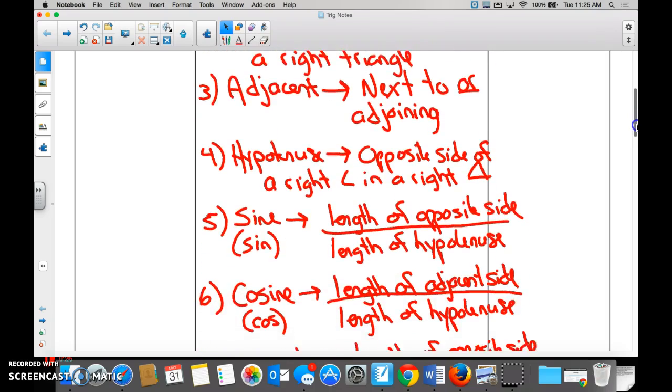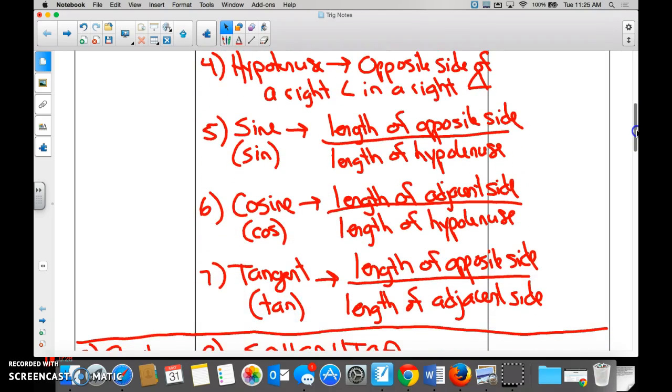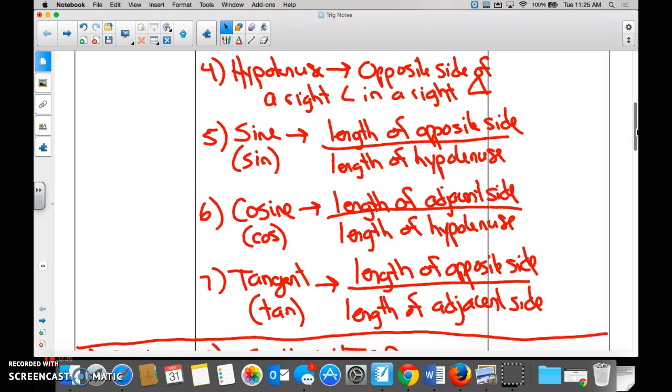Adjacent, hypotenuse, hopefully you know what they mean. Five, six, and seven, very important if you're going to do trig. Sine. Cosine. Tangent. Sine would be opposite over hypotenuse. Cosine would be adjacent over hypotenuse. And tangent would be opposite over adjacent.